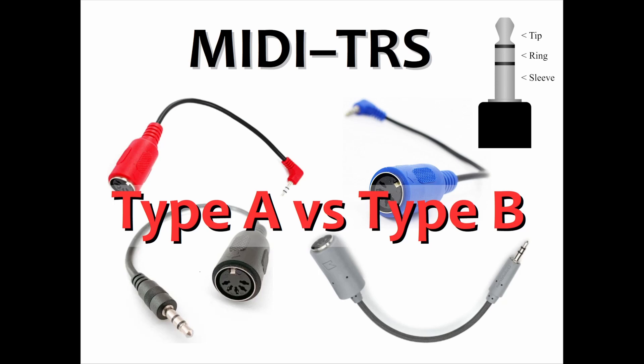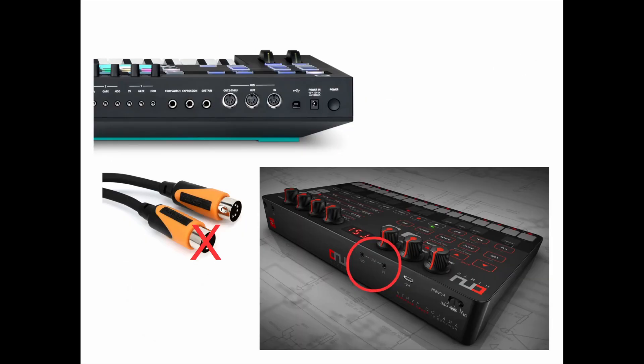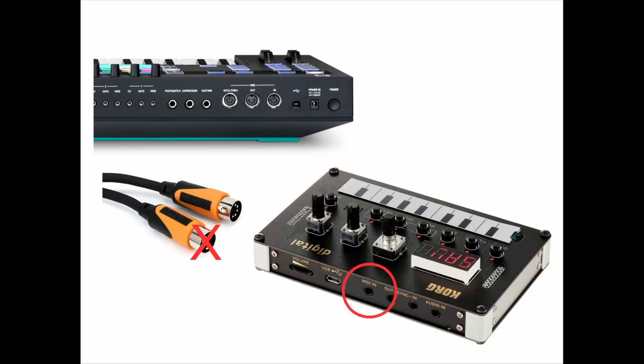Today we're going to talk about MIDI TRS Type A and Type B adapters. If your MIDI device has the small TRS headphone-style jacks on it, like this IK Multimedia Synth or this Korg NTS1 Synth, then you'll need to have an adapter to convert from the small TRS connector to the 5-pin DIN connectors.